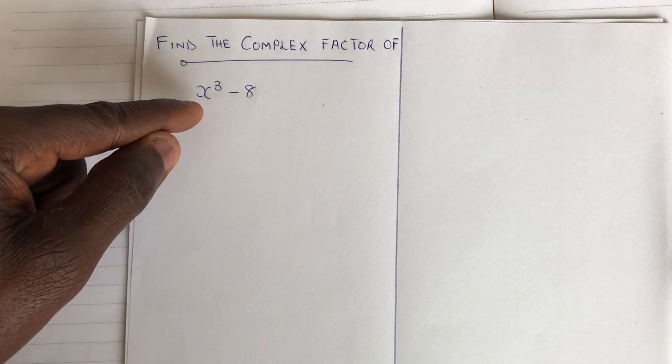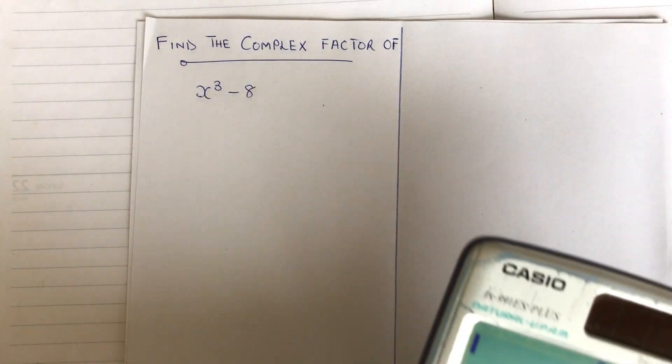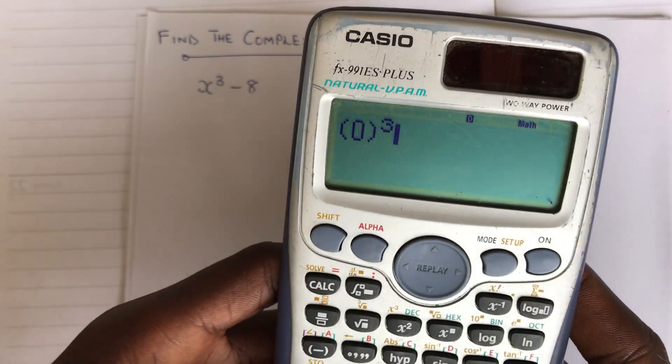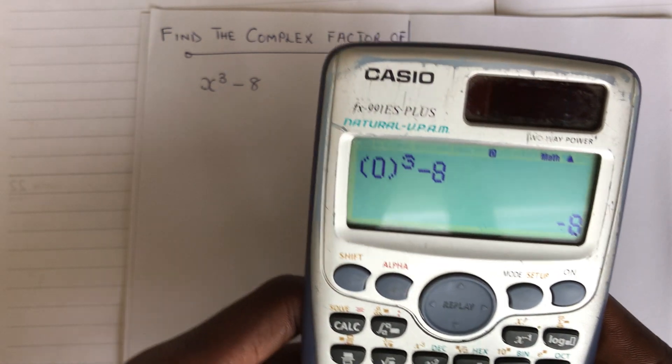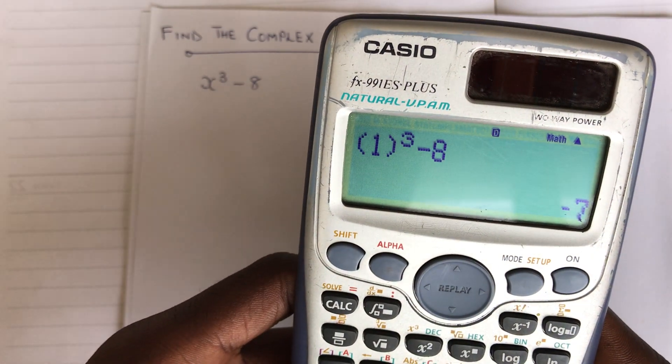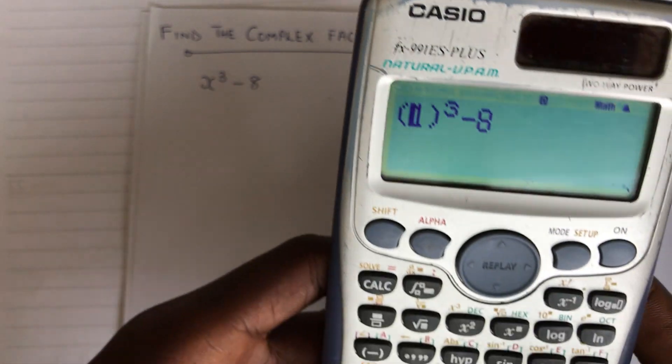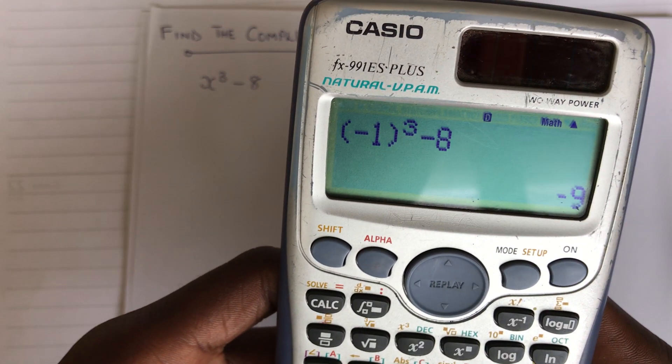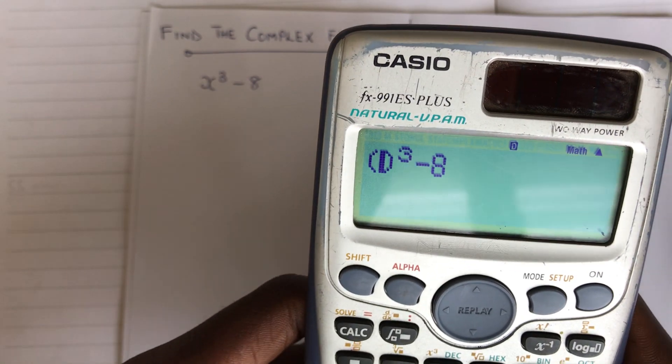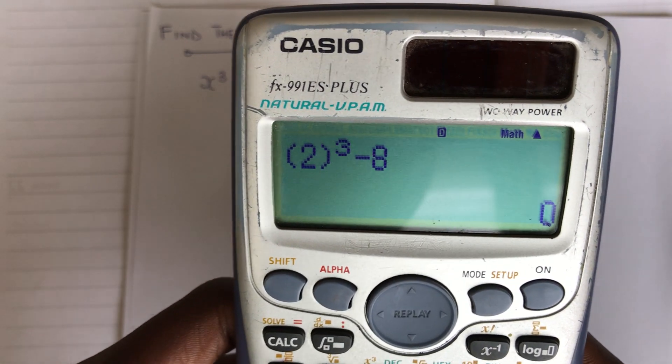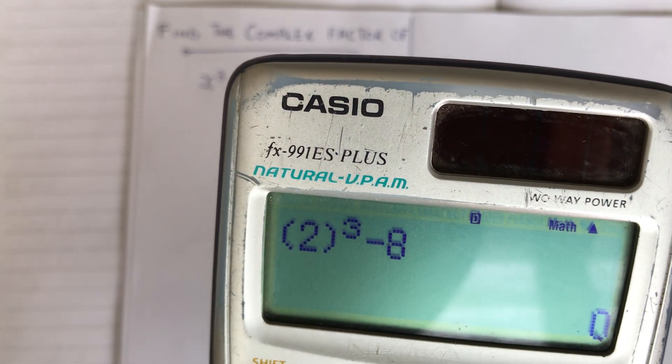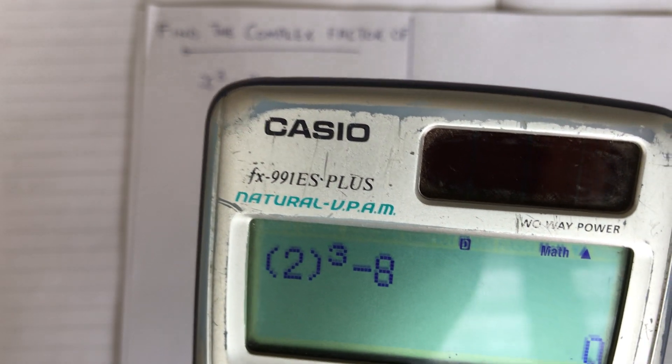I already know the value, but usually you can do trial and error to see what will be the value. So let's check which value of x minus 8 will give us 0. Let's start with 0. The result is 8. So you can also try 1. The result is 7. Even if you try negative 1, the result will be 9. So let's try 2. Now we are getting 0. So you can see, you already know.